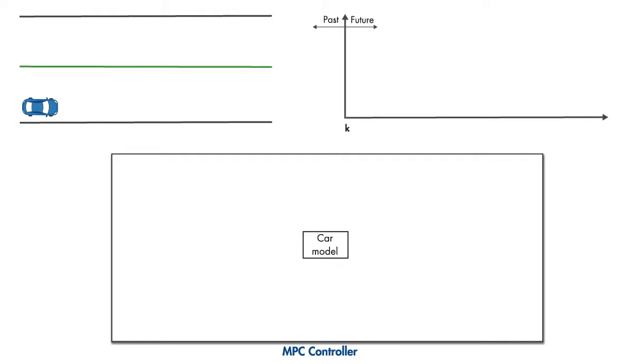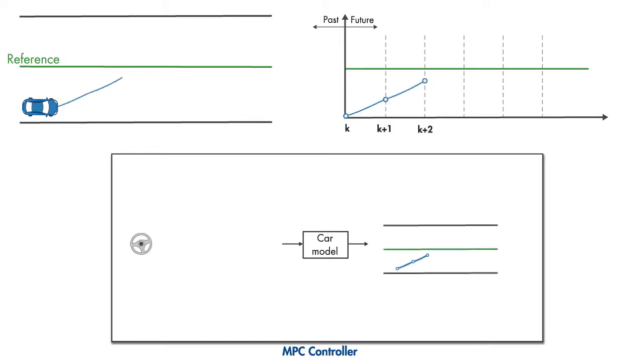The middle of the lane is a reference. Let's use a green line to show it on the plot. At the current time, the MPC controller uses the car model to simulate the car's path in the next P time steps, if the steering wheel would be turned, let's say, as seen here.